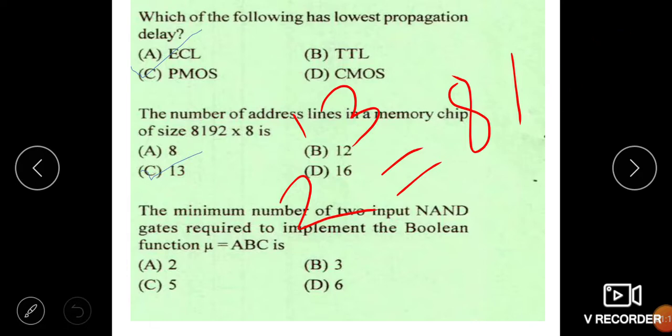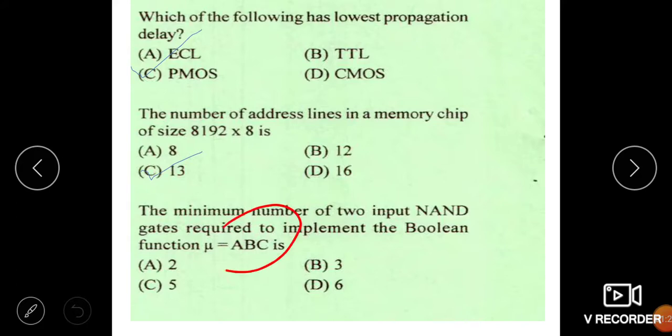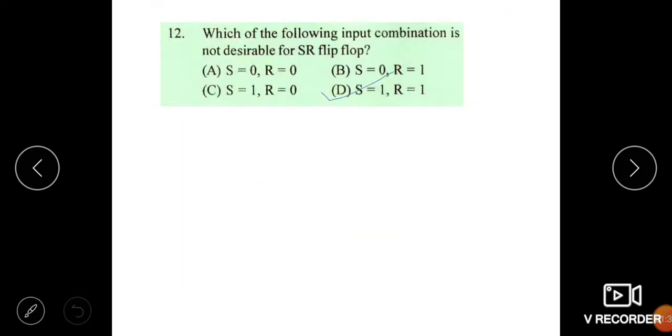Next question. The minimum number of 2 input NAND gates required to implement Boolean function ABC is 3 NAND gates.